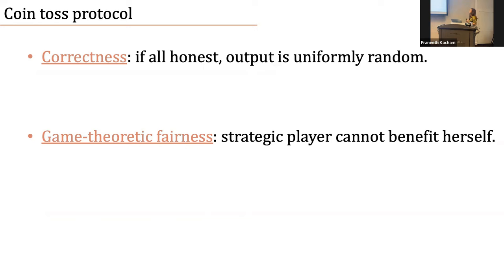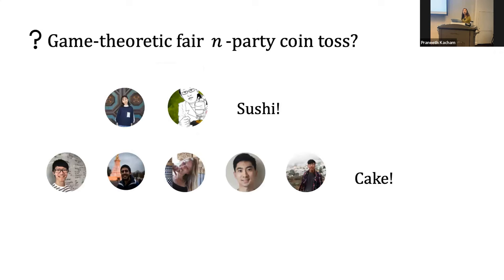So the fairness achieved by Blum's coin toss protocol is more of a game-theoretic flavor. Game theoretic fairness, which is a weaker notion than strong fairness, says that a strategic player just cannot benefit herself — but she can benefit the other. A rational player would not do this. So now we have seen a game theoretic fair two-party coin toss between Joel and me. A natural question is: can we achieve game theoretic fair multi-party coin toss?